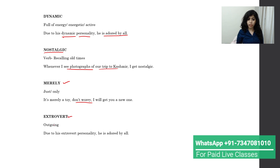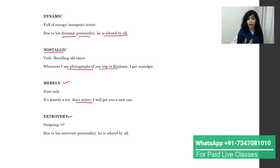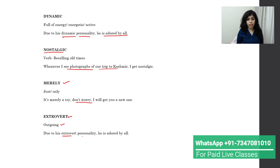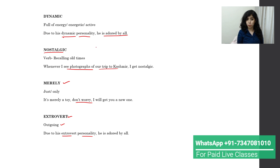Next is 'extrovert,' which means outgoing — a person who is not afraid of talking to strangers, who can talk easily to many people and is confident. For example: 'Due to his extrovert personality, he is adored by all.' You can use both 'dynamic personality' and 'extrovert personality' when describing a person.